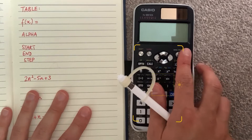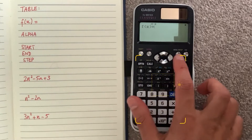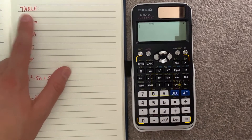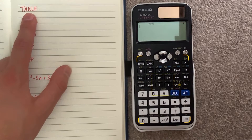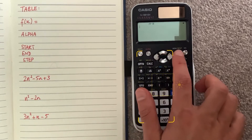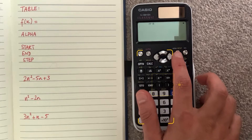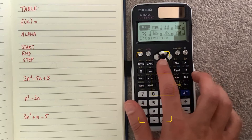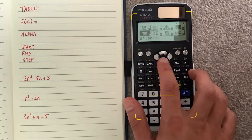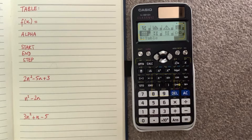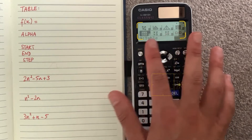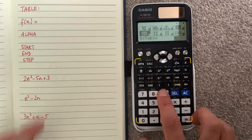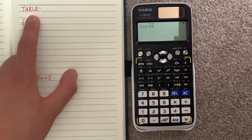Pretty much all calculators will have this table mode setting. Switch your calculator on — mine is already in table mode but I'll put it back to normal first. Look for table mode; it might be under 'mode' or 'menu' depending on your calculator. On mine I press menu and scroll to find table, which happens to be number nine. You can just press the number directly to go there.